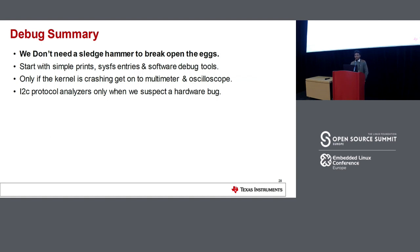To summarize the debug approach: we don't need a sledgehammer to break open the problem. Start with simple prints, use the regulator framework and SysFS nodes. Only if the kernel is crashing or there is a real hang with no control do we move to multimeters and oscilloscopes. The I2C protocol analyzer is also a very useful tool for that kind of hardware debug.